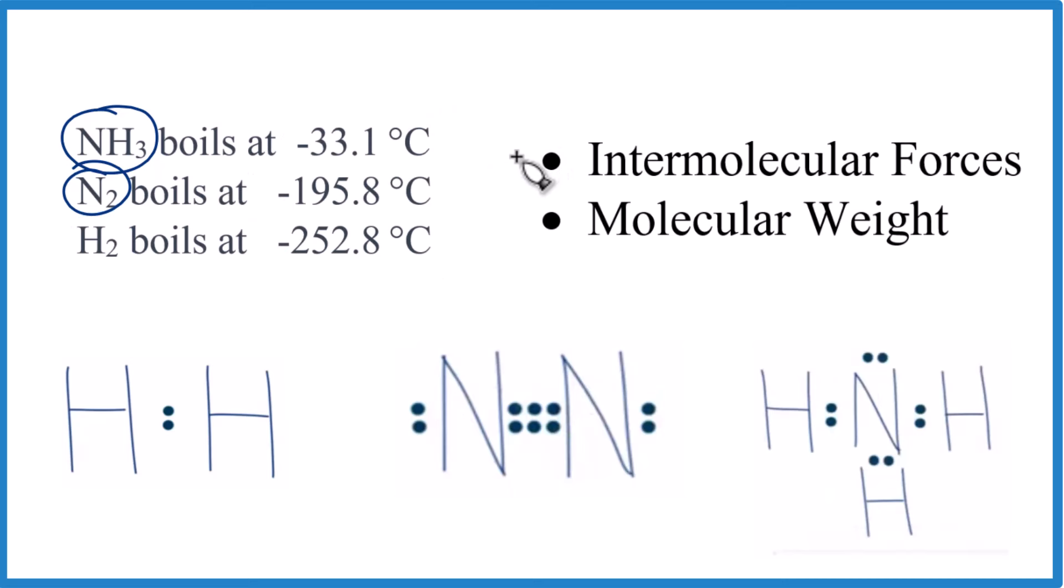First off, there are two things we're going to consider. We're going to look at intermolecular forces like hydrogen bonding or London dispersion forces and the mass of the molecule - the molecular weight. These are the two big factors we need to consider when we order these in terms of their boiling point.